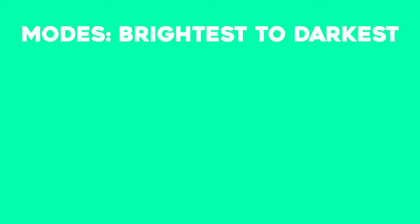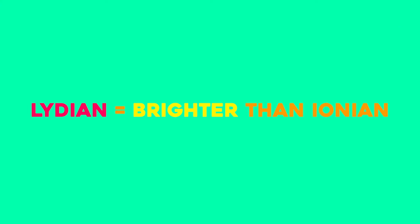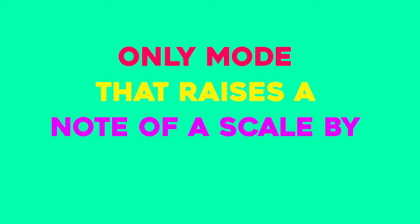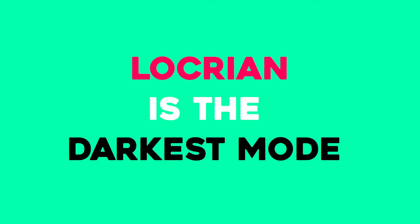Modes are basically different flavors of major and minor scales. It's helpful to describe them as brighter or darker in color. Ordered from brightest to darkest: Lydian, Ionian, Mixolydian, Dorian, Aeolian, Phrygian, and Locrian. Lydian is brightest because it's the only mode that raises a note by a semitone; the modes get darker as more notes are lowered from Ionian, making Locrian the darkest. Try experimenting with each mode to discover how they sound and use them in your own music. Let us know what music theory concept you'd like to learn about next in the comments, and please like and subscribe to Song Psych.